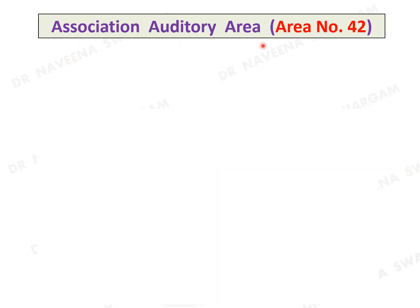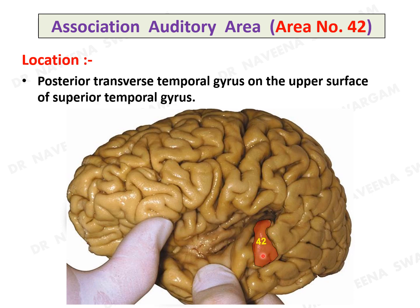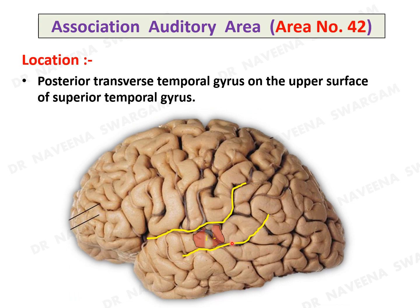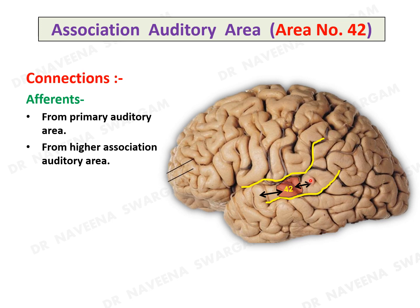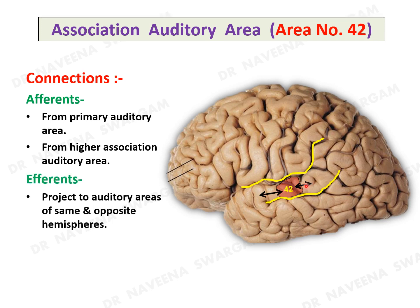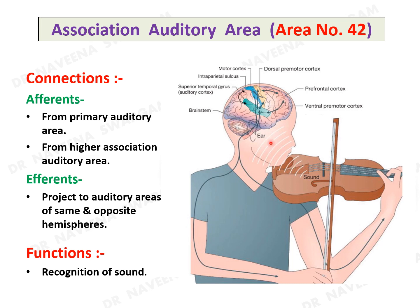Association auditory area, area 42: it occupies the posterior transverse temporal gyrus on the upper surface as well as the lateral surface of the superior temporal gyrus. It receives afferents from auditory areas of the same hemisphere, and afferents project to auditory areas of the same and opposite hemispheres. Its function is to recognize the sound perceived by the primary auditory area.